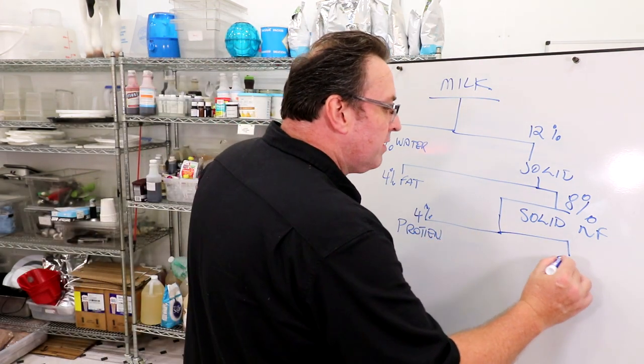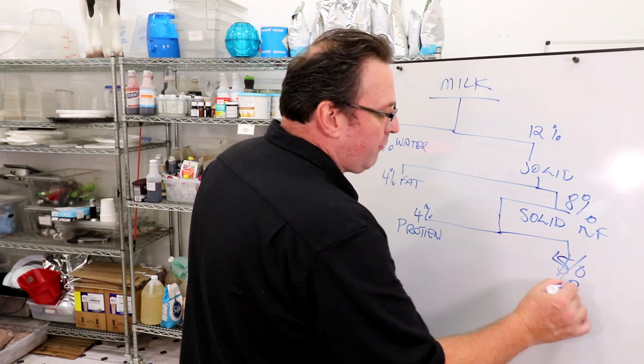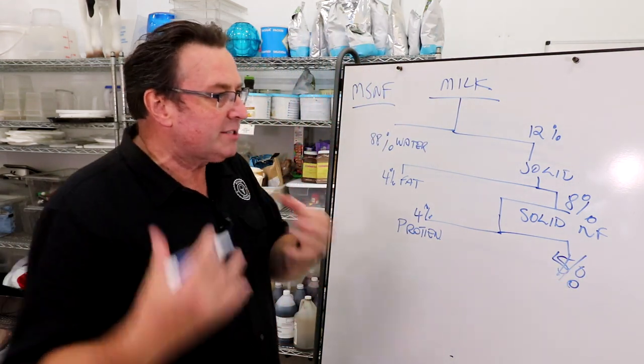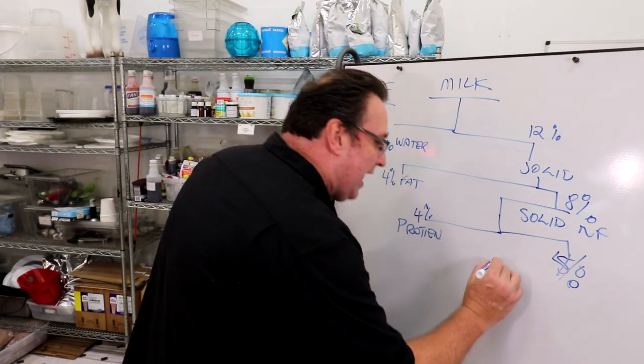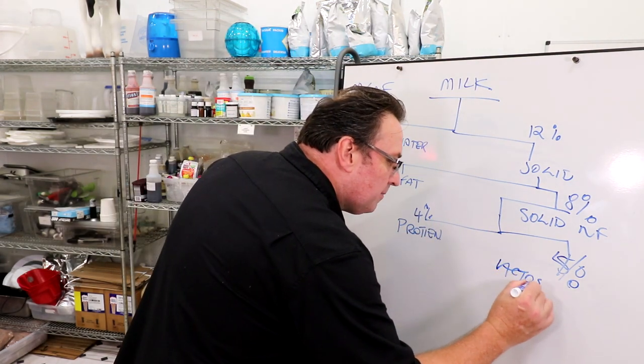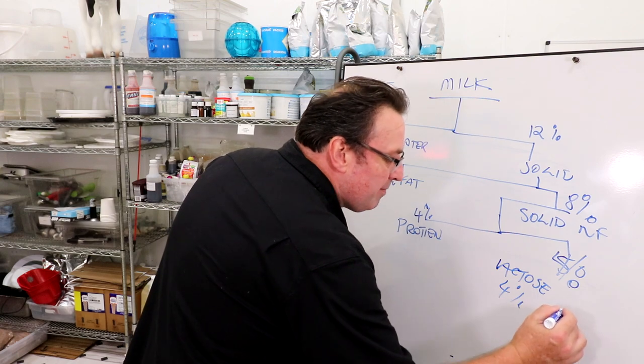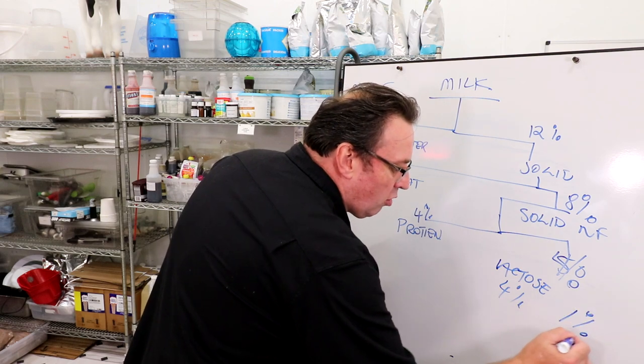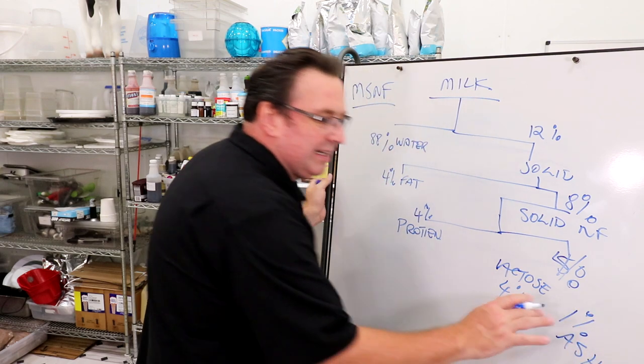Over here you're left with about five percent, or say four percent if we want to make the numbers work. That's basically a combination of lactose, which is about four percent, and about one percent or so of ash.